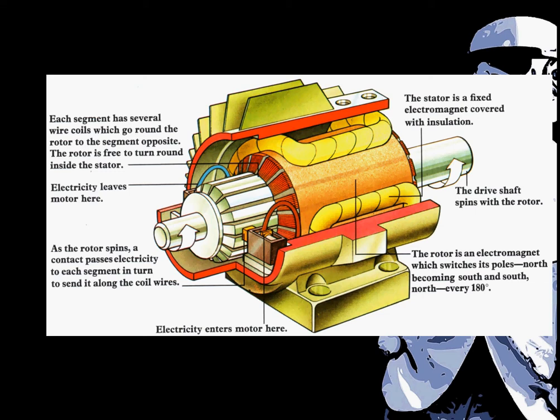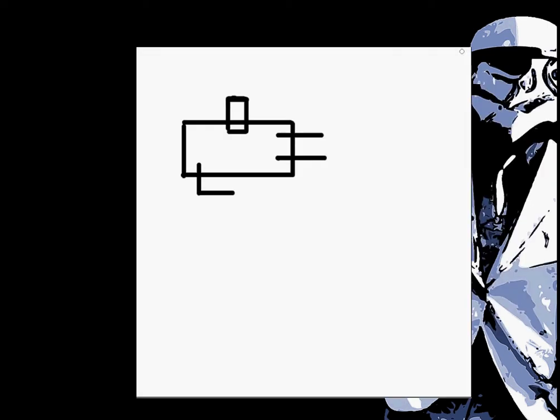The first thing you are going to want to know is the workings of a motor. There is a positive, which is right there, the red wire. It says right below it, electricity enters the motor here. And the negative, which is also right there, it says electricity leaves the motor. You are going to want to keep that in mind.